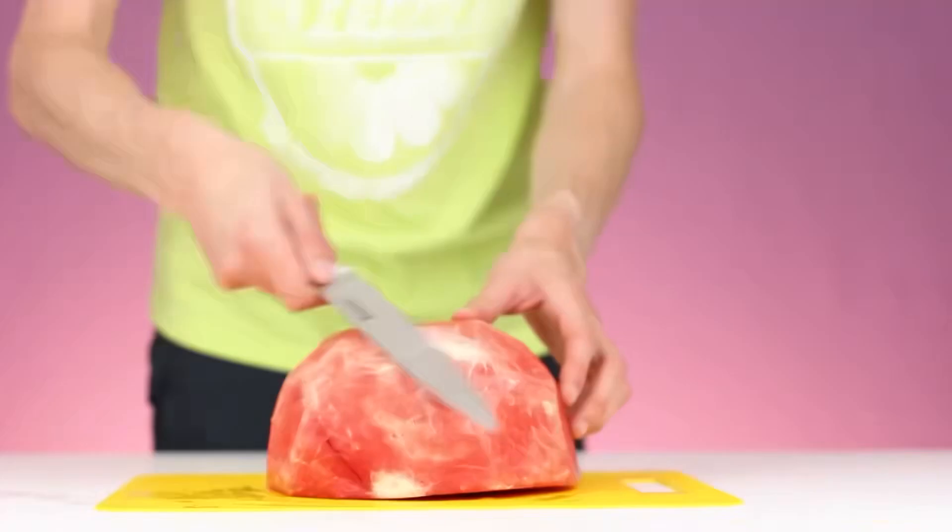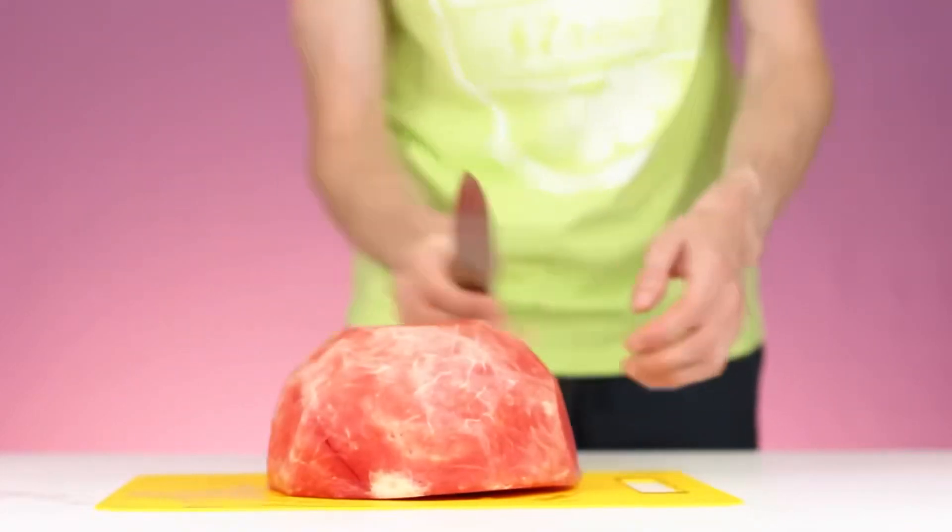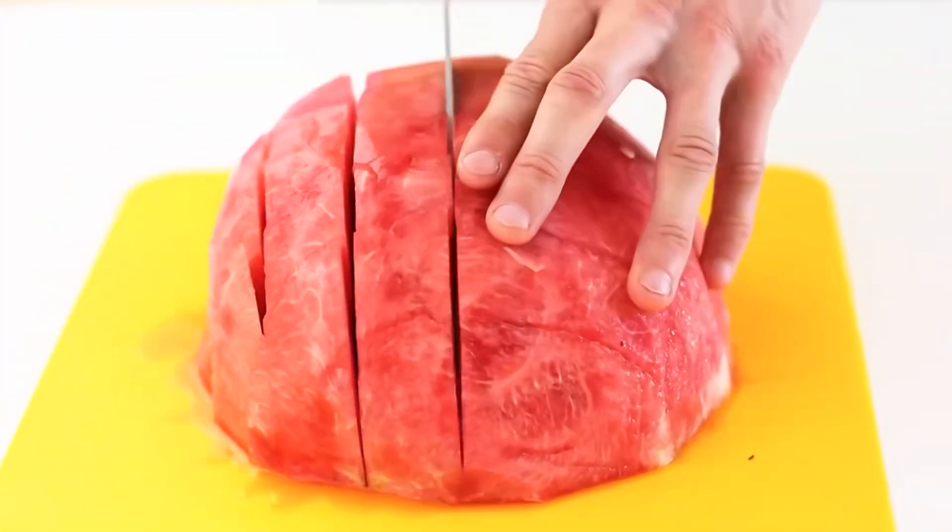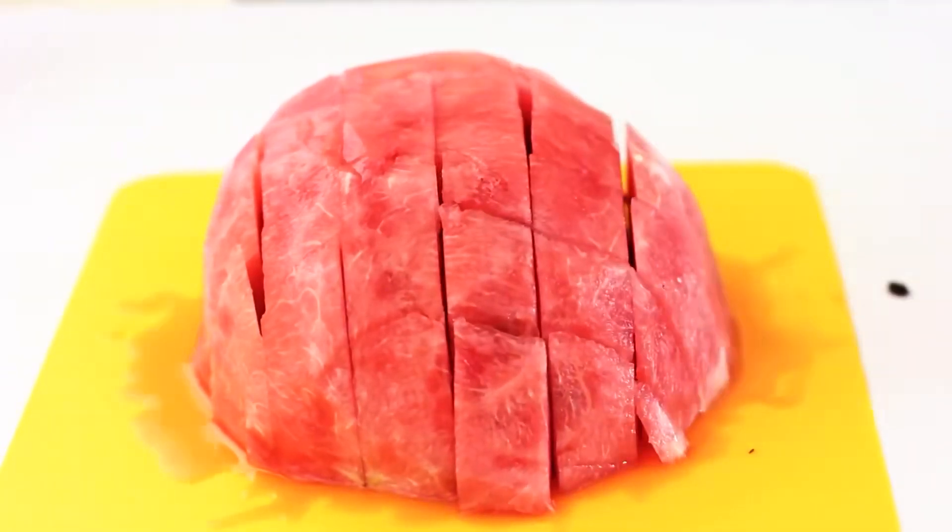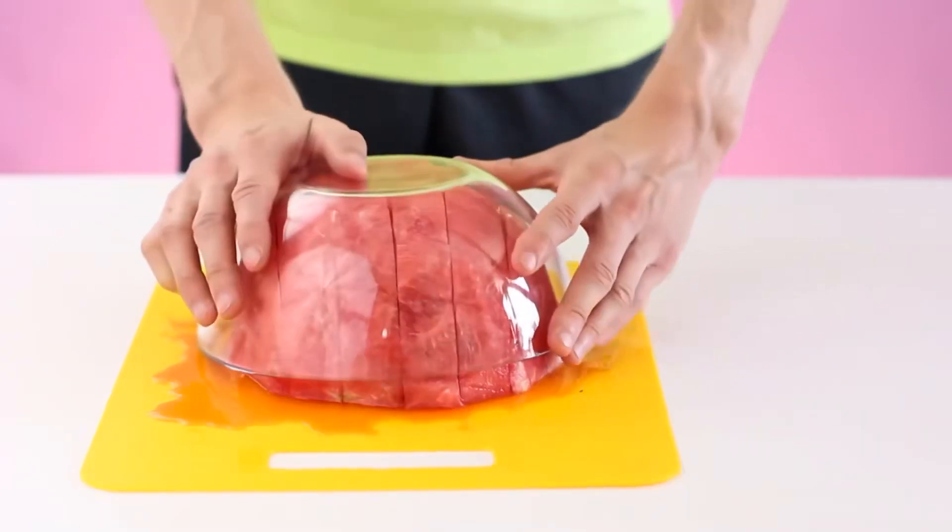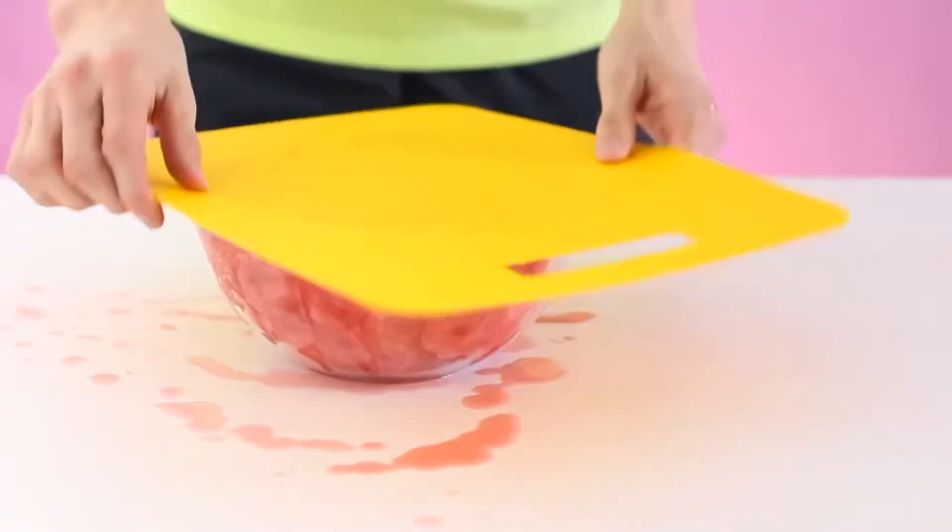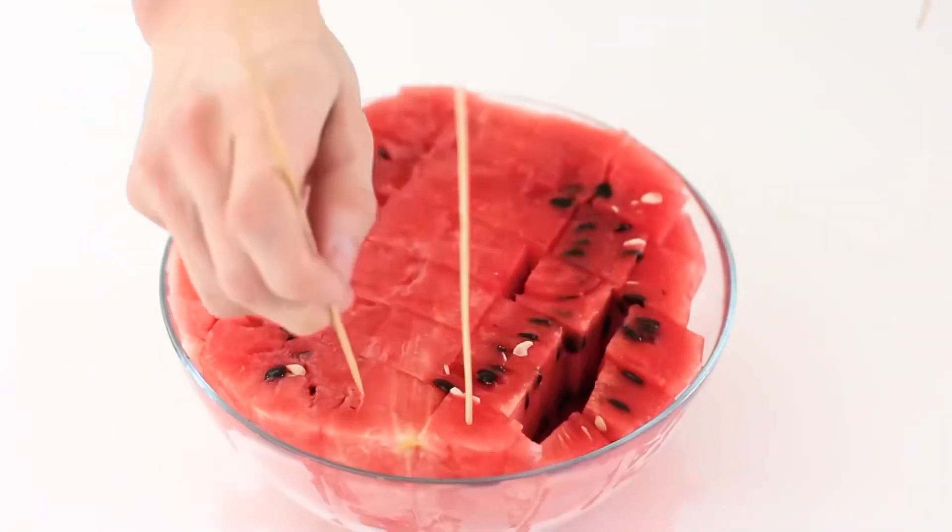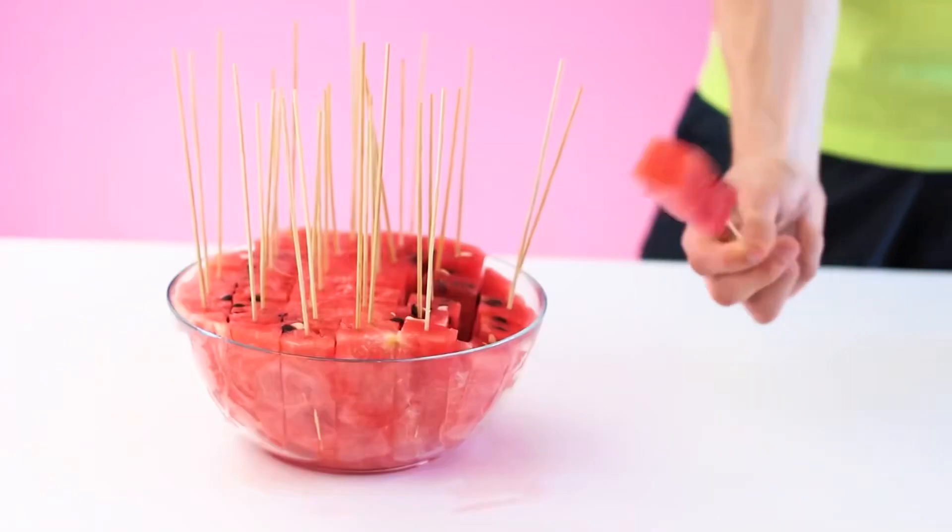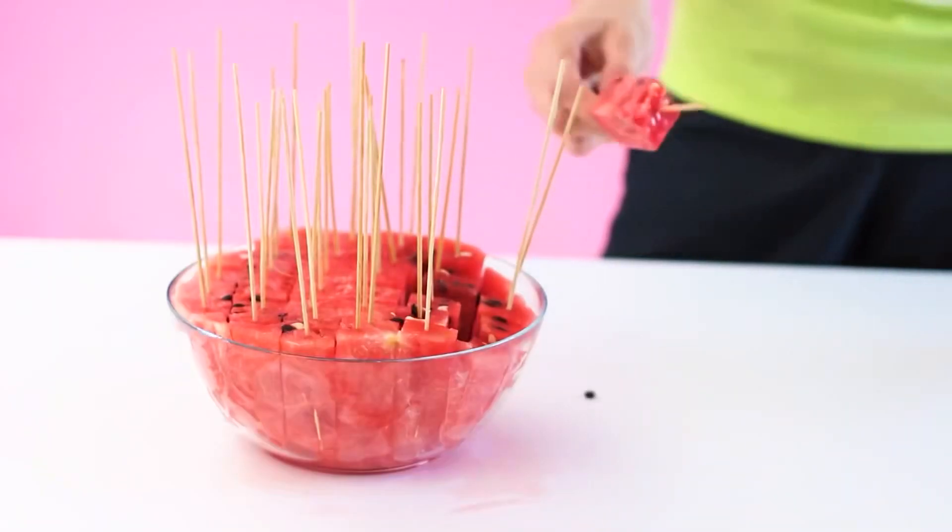This time, we will take half a watermelon and gradually cut off all the peel from it. And we will cut according to the same principle as in the third method. Take a deep bowl, cover the watermelon with it and turn it over. Now the whole watermelon is in the plate. Stick wooden skewers into all these pieces for convenience.